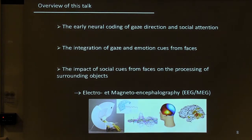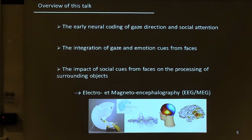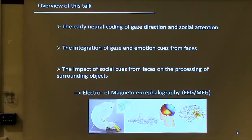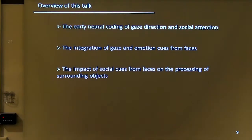Over the last years, we have run a series of studies to examine the early neural coding of gaze direction and social attention, the integration of gaze and emotion cues from faces, how fast the brain is able to do that, and what brain regions are involved. We have also examined the impact of social cues — particularly gaze — on the processing of surrounding objects. For this, we used MEG and also EEG.